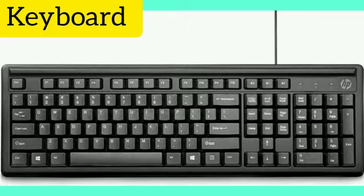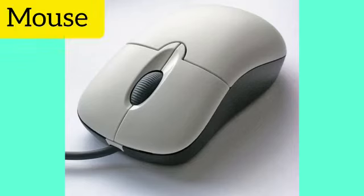There are different types of keys on a keyboard, such as alphabet keys, number keys, space bar key, enter key, and so on. The next main part of the computer is the mouse. Spelling of mouse: M-O-U-S-E.